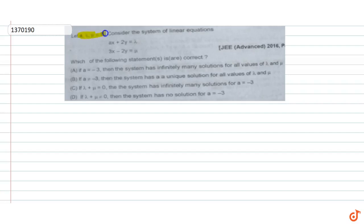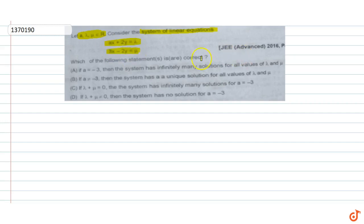Let λ and μ belong to the real numbers. Consider the system of equations: ax + 2y = λ and 3x − 2y = μ. Which of the following statements are correct?